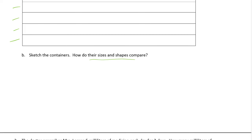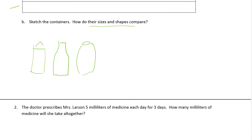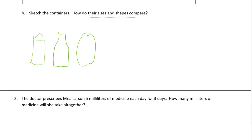How do their sizes and shapes compare? You may have one that looks like a carton — like a box — or a bottle that might look like this. You could have all different kinds of shapes for a bottle. The thing is, if they're about a liter, some might be a little bit bigger and some a little bit smaller, but they should be about the same size in your picture.